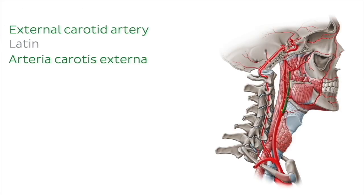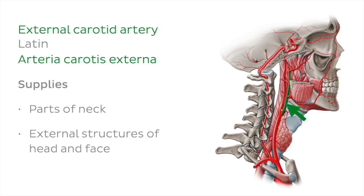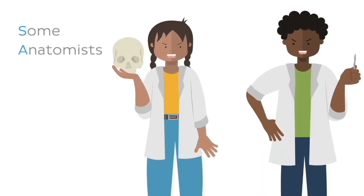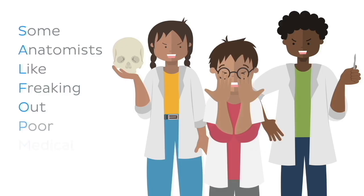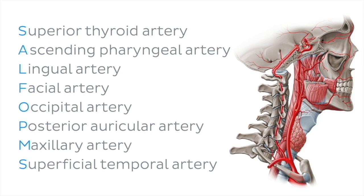Let's start with the external carotid artery, which you can see here highlighted in green in this lateral view of the head and neck. The external carotid artery gives some branches to parts of the neck and supplies the external structures of the head and face. It has eight branches which can be remembered by the mnemonic: 'Some anatomists like freaking out poor medical students.' The first letter of these words helps you remember the name of all those branches.